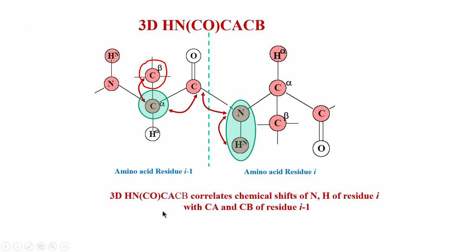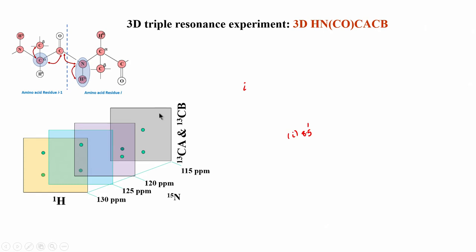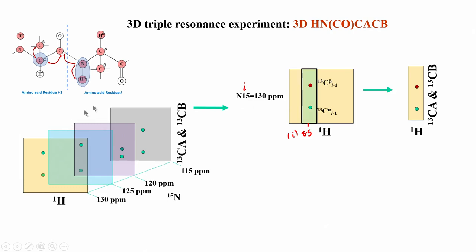The HNCOCACB experiment correlates the chemical shift of N and H atoms of residue I with the CA and CB of I-minus-1. Now, the question is how it is complementary to HNCACB. In 3D HNCOCACB, you get 2 peaks for every proton-nitrogen pair — meaning for every amino acid you get 2 peaks: one corresponding to the alpha carbon of I-minus-1 and one to the beta carbon of I-minus-1. The phase (sign) of the peak in HNCOCACB is opposite for alpha and beta peaks.